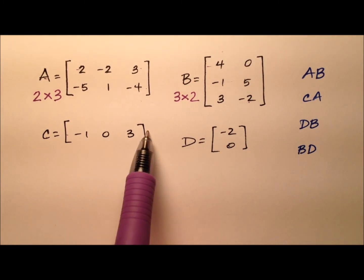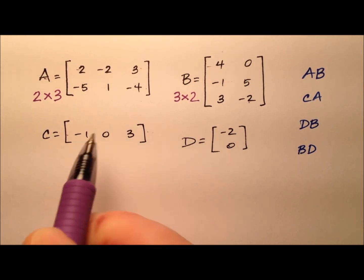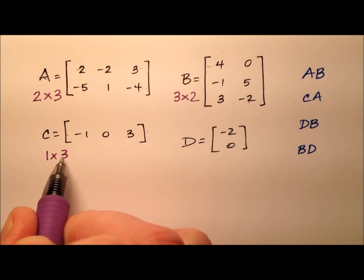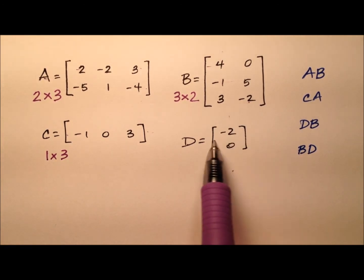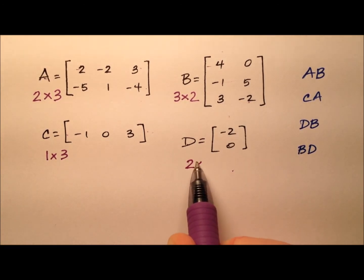It looks like C is a row matrix, so one row, three columns, so 1 by 3. And it looks like D is a column matrix; it has two rows but just that one column.